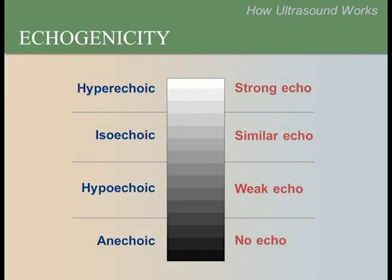The term echogenicity refers to the brightness or whiteness of the echoes compared to the echoes that surround it — in other words, it describes the strength of returning echoes. There are four levels of echogenicity. Hyperechoic means a very strong echo, which will appear brighter than surrounding echoes, usually white or light gray. Anechoic structures appear black because they do not reflect sound waves. Isoechoic and hypoechoic are shades of gray between the white hyperechoic and the black anechoic.